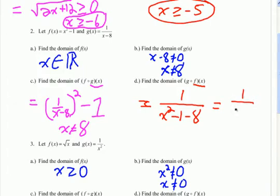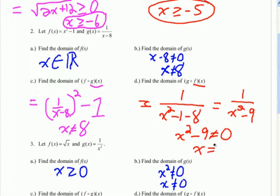We've got 1 over x squared minus 9, so we can't let the denominator equal zero. Setting x squared minus 9 equal to zero, we add 9 and take the square root — remembering to include plus or minus. So the domain restriction is that x can't equal positive 3 and x can't equal negative 3. You can put that into interval notation. Since there was no original restriction on f of x, this is the only restriction we have to worry about.